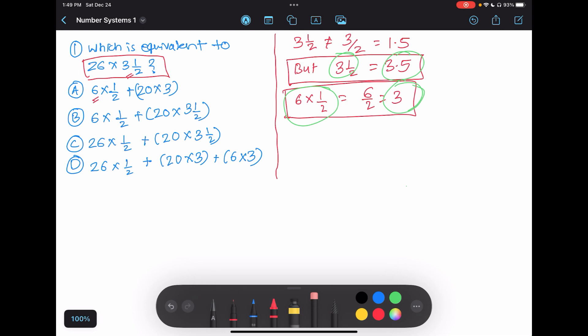Our question was 26 multiply by 3½, which makes it 26 multiply by 3.5. The easiest way to solve such problems is to separate it. You can say 20 multiply by 3, plus 6 multiply by 3, plus 26 multiply by 0.5.